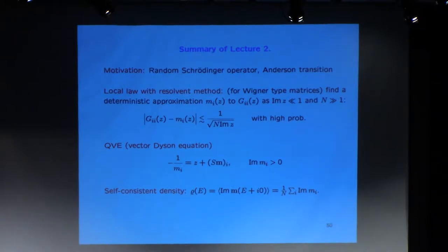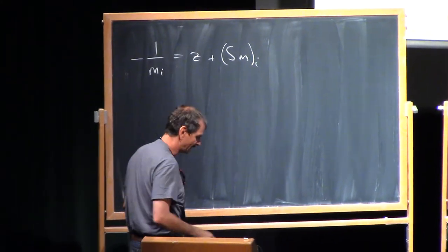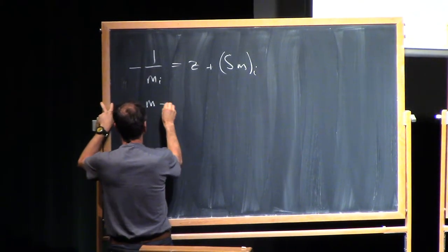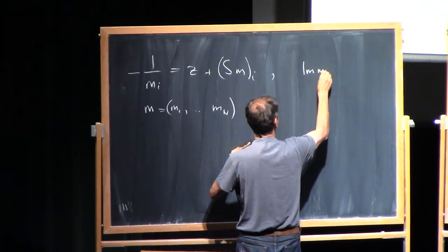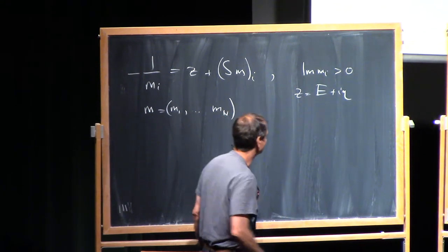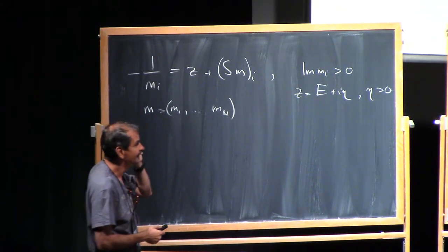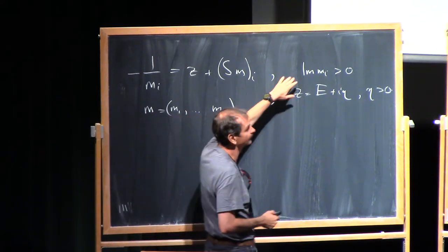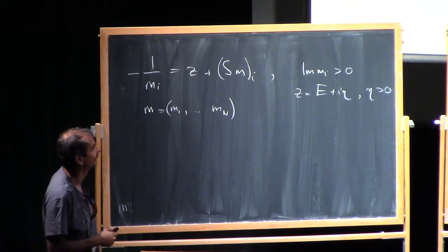The goal is to figure out what M_i is. M_i is the solution of our quadratic vector equation: 1 over M_i equals z plus (S M)_i. It's a vector equation where the unknown M has N components, with the side condition that the imaginary part of M_i is always positive. z is written as E plus i*eta, also in the upper half plane. This equation has a unique solution under this additional constraint, and G_ii is close to that M_i - that's what the local law says.